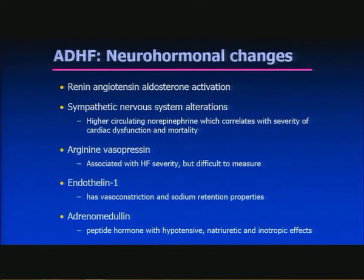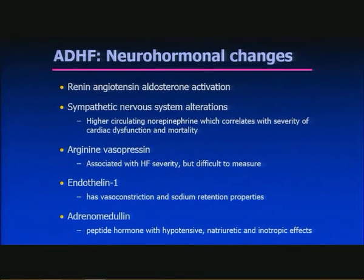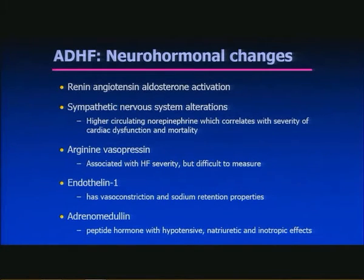Lastly, neurohormonal changes are many and varied: renin-angiotensin-aldosterone activation; sympathetic nervous system alterations including higher circulating norepinephrine, which correlates with severity of cardiac dysfunction and mortality; arginine vasopressin, associated with heart failure severity but difficult to measure; endothelin-1, which has vasoconstriction and sodium retention properties; and adrenomedullin, a peptide hormone with hypotensive, natriuretic, and inotropic effects.